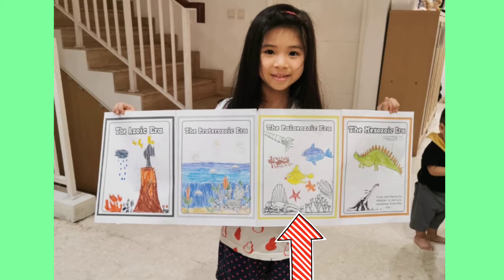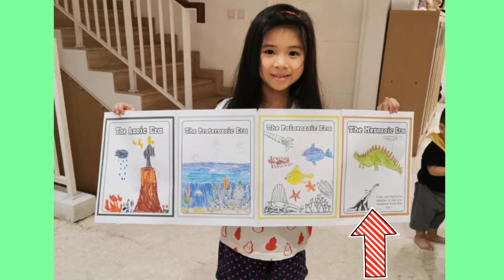Next, during the Paleozoic era, do you remember what kind of life was there on planet Earth? Yes, there were mosses and ferns, lots of trilobites and millipedes and centipedes. Even we had fish and sharks and also big insects like dragonflies.